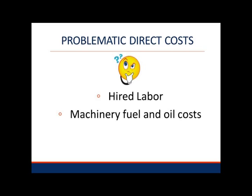Two direct costs that were somewhat problematic for them to estimate were hired labor and machinery fuel and oil costs. After struggling with this, they called their extension office for suggestions. Their extension educators suggested that they divide the hired labor expense into categories to make it easier to assign costs to a specific enterprise.